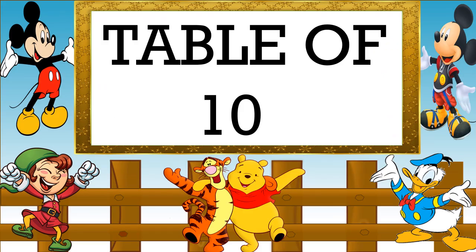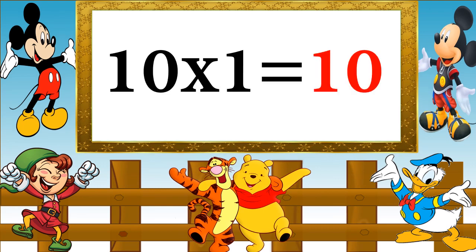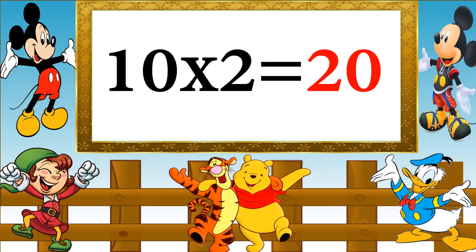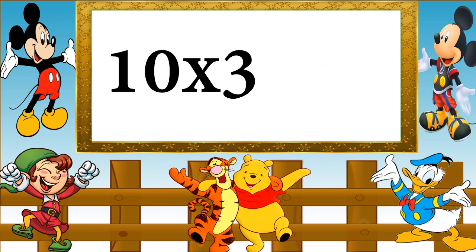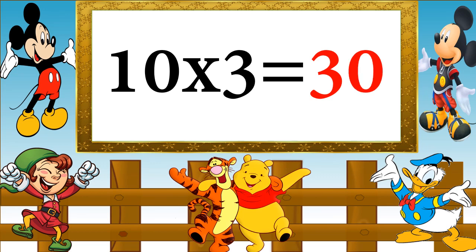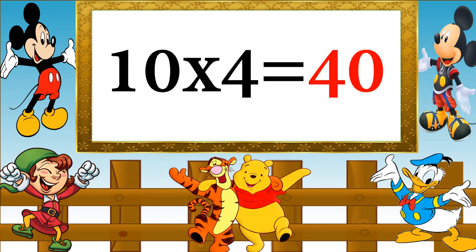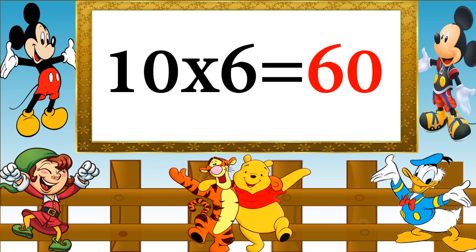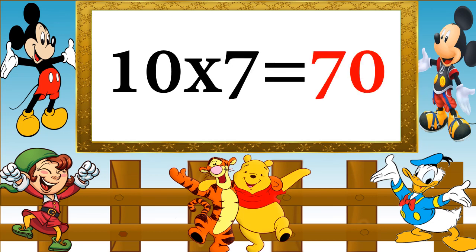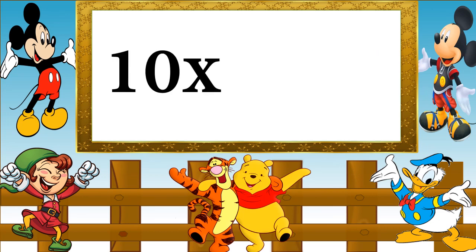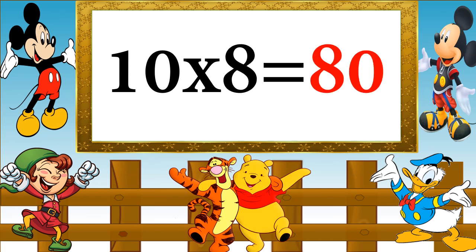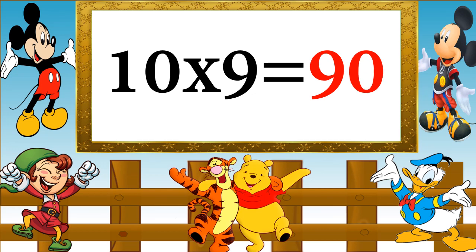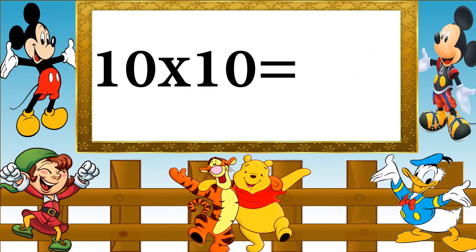Table of 10. 10 ones are 10, 10 twos are 20, 10 threes are 30, 10 fours are 40, 10 fives are 50, 10 sixes are 60, 10 sevens are 70, 10 eights are 80, 10 nines are 90, 10 tens are 100.